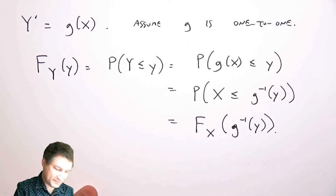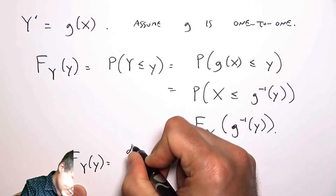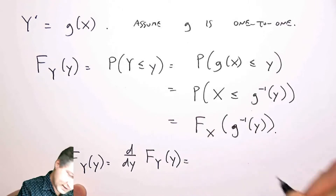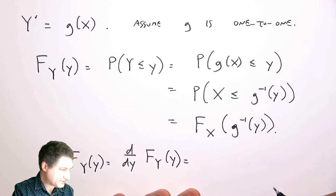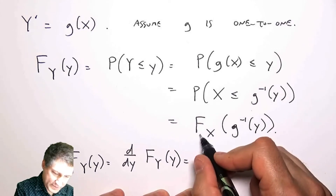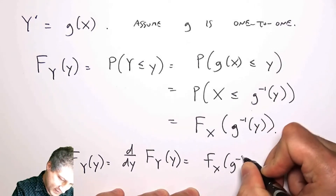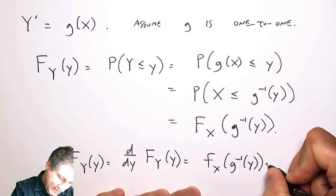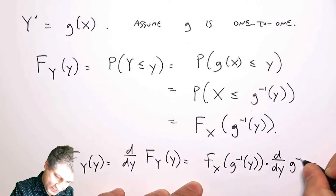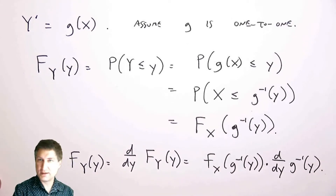To get the PDF I take the derivative with respect to y. Using the chain rule: the derivative of the CDF of X is the PDF of X, and then I also take the derivative of the inside g⁻¹(y) with respect to y. That's the general functional approach for solving these kinds of problems.